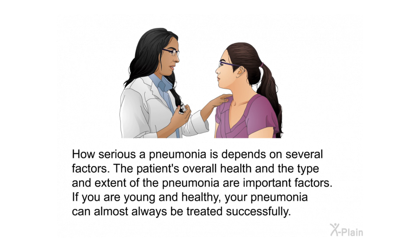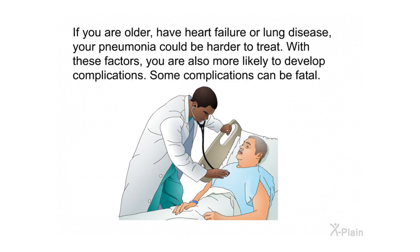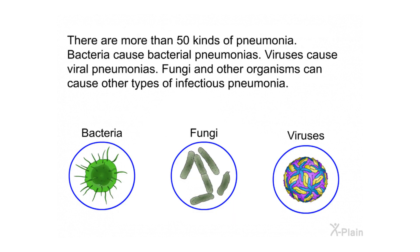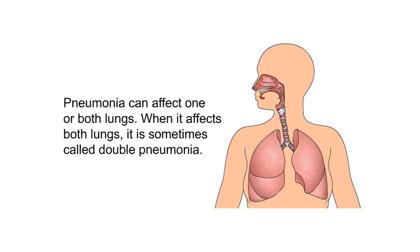How serious a pneumonia is depends on several factors, including the patient's overall health and the type and extent of the pneumonia. If you are young and healthy, pneumonia can almost always be treated successfully. If you are older or have heart failure or lung disease, pneumonia could be harder to treat, and you are more likely to develop complications — some of which can be fatal. There are more than 50 kinds of pneumonia: bacteria cause bacterial pneumonias, viruses cause viral pneumonias, and fungi and other organisms can cause other types. Pneumonia can affect one or both lungs; when it affects both, it is sometimes called double pneumonia.